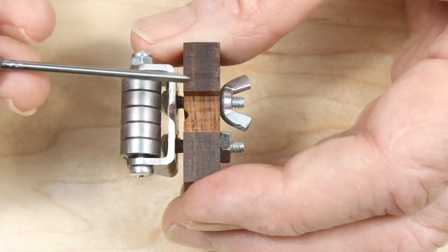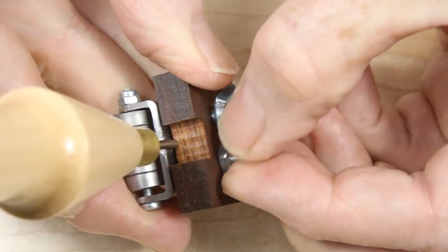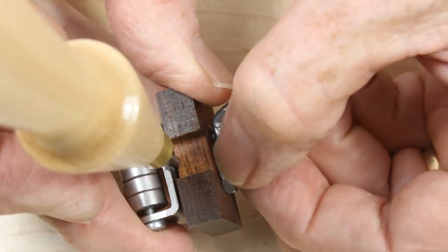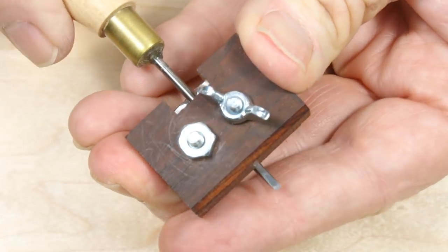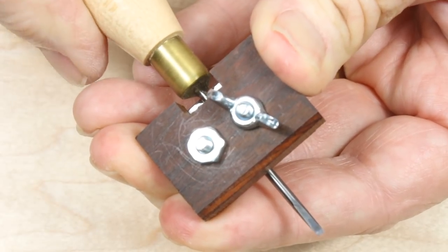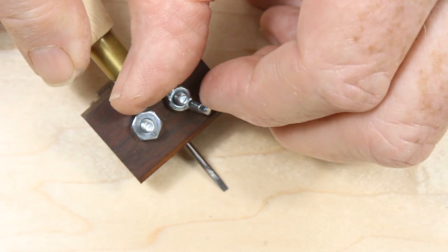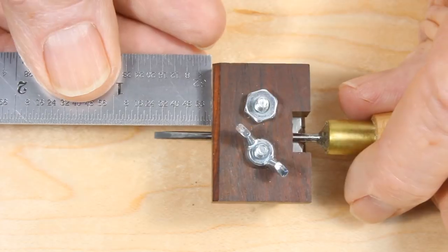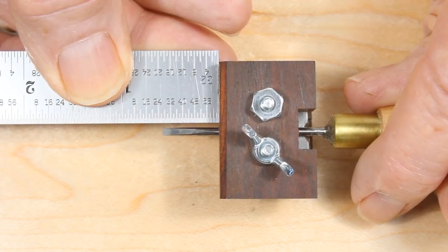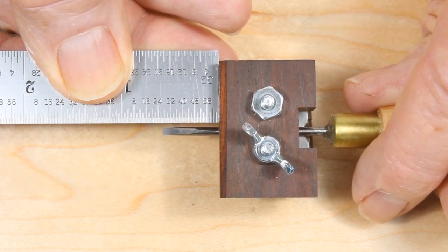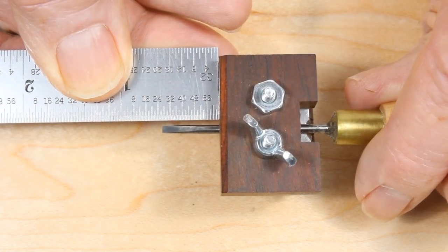To use the jig, insert a chisel with the bevel pointing down, and advance or retract it until the bevel sits perfectly flat on the sharpening plate. When it is flat and square, adjust the ordinary nut finger tight, and tighten the wing nut. The bevel angle is entirely controlled by the length of the chisel blade that projects out from the front of the jig. So once you find the right setting, measure this length, and you can reproduce the same angle every time. You can also make a simple jig to reproduce this length.